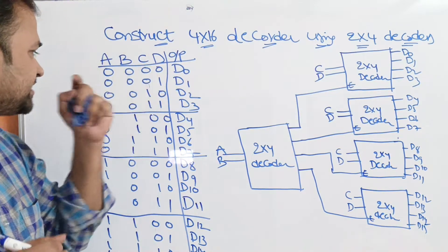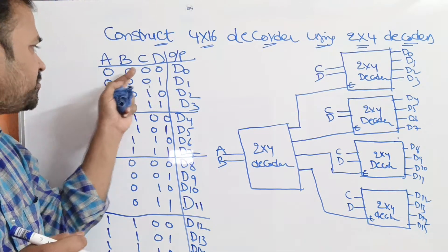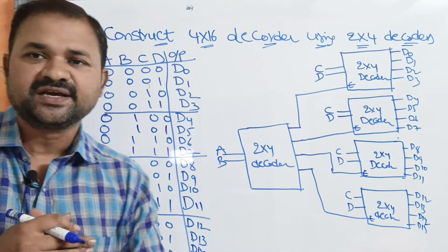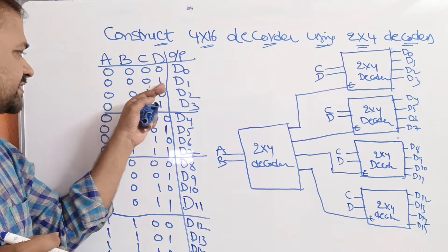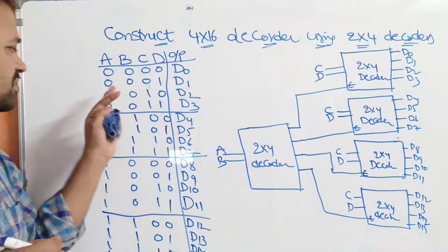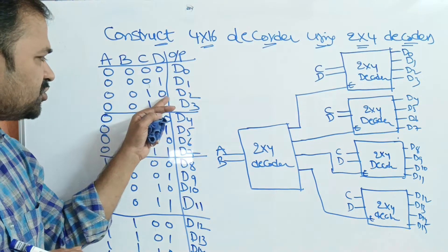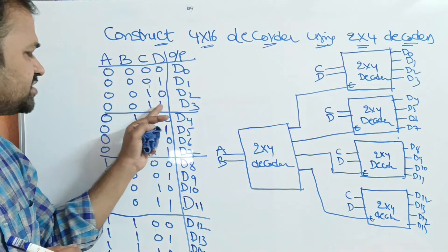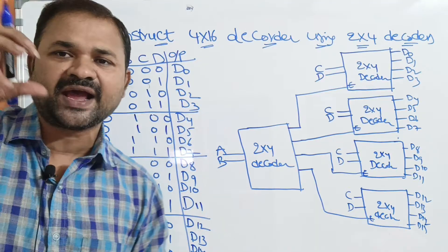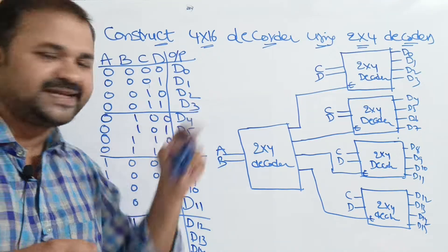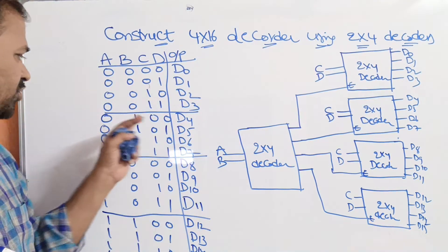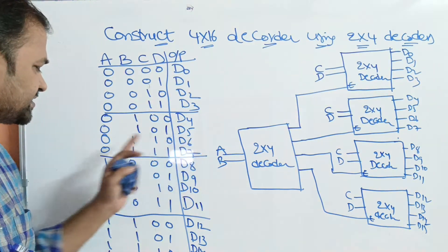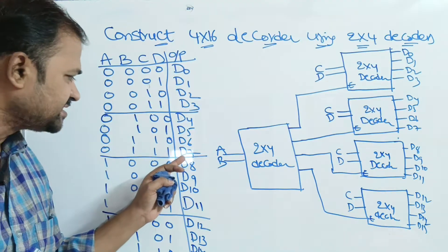Let the inputs be A, B, C, D. If the inputs are all 0s, then the decoder produces D0 as the output. If the inputs are 0001, then D1 is the output. If the inputs are 0010, then D2 is the output. If the inputs are 0011, then D3 output line will be enabled. 0100 means D4, 0101 means D5, 0110 means D6, 0111 means D7.